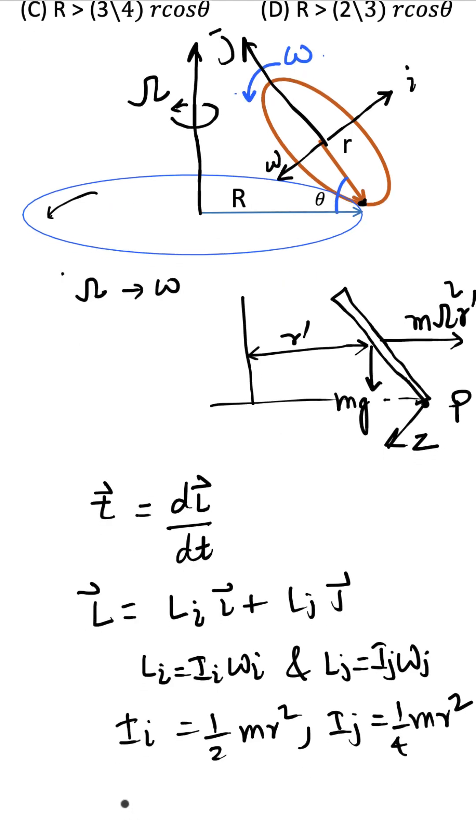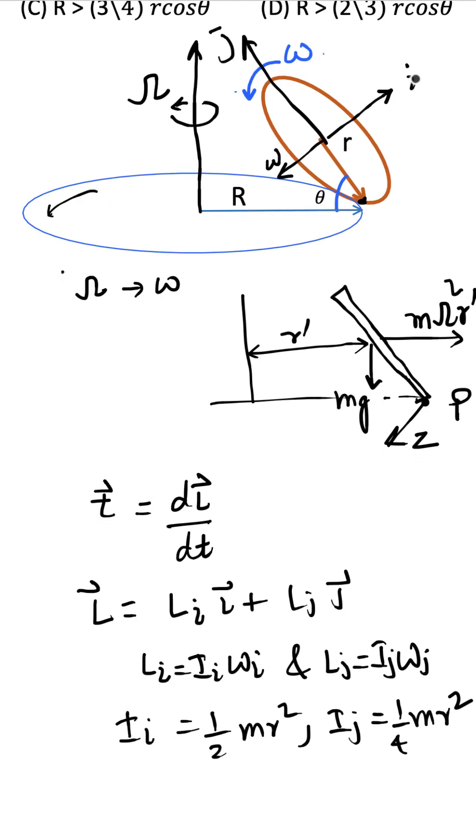And then take the L_x. So L_x is, let's say if this is the L_i, take the L_x. L_x means in this direction - let's say this is x and this is y. So compute L_x, and then torque_z will be dL_x/dt.